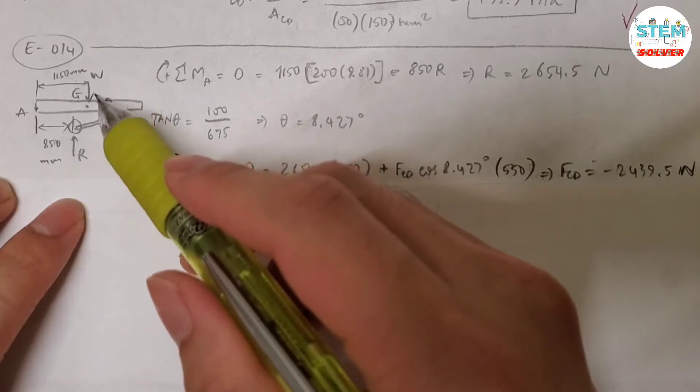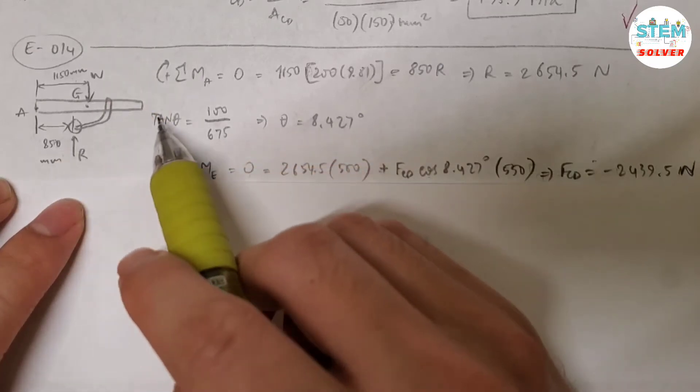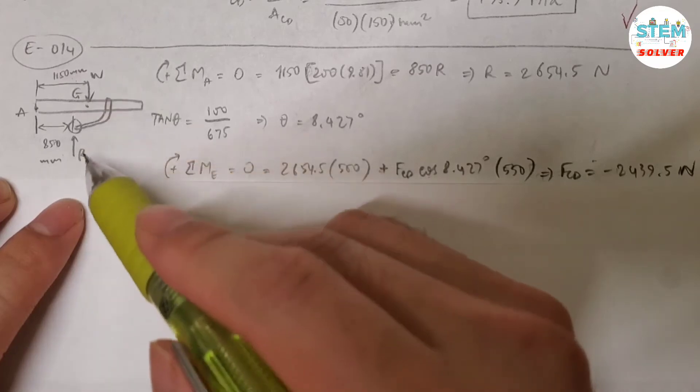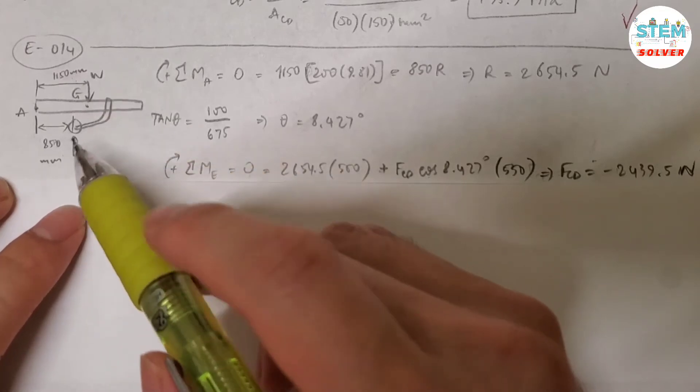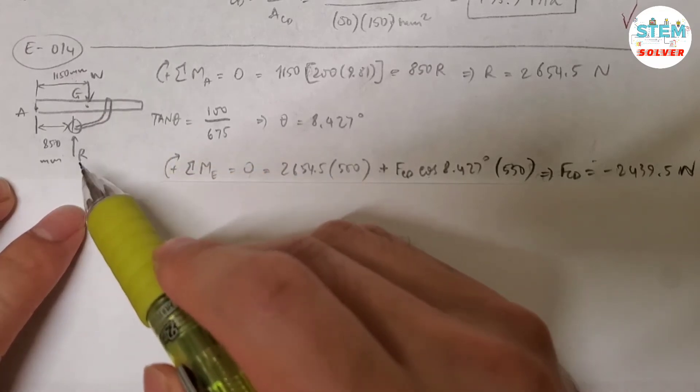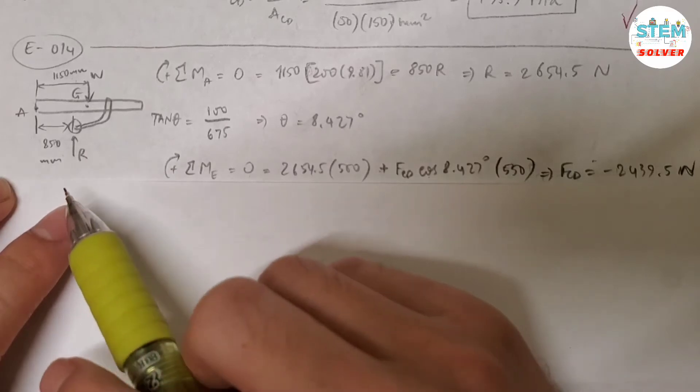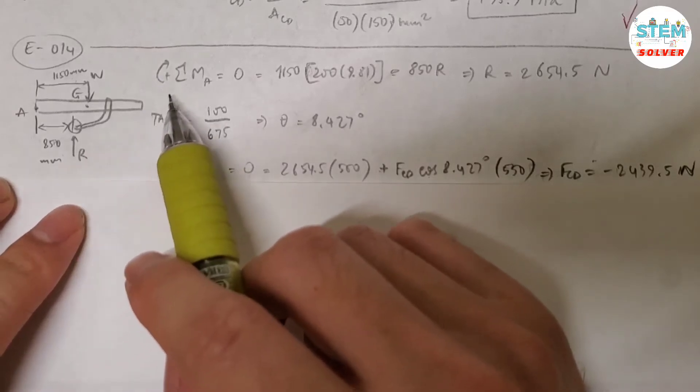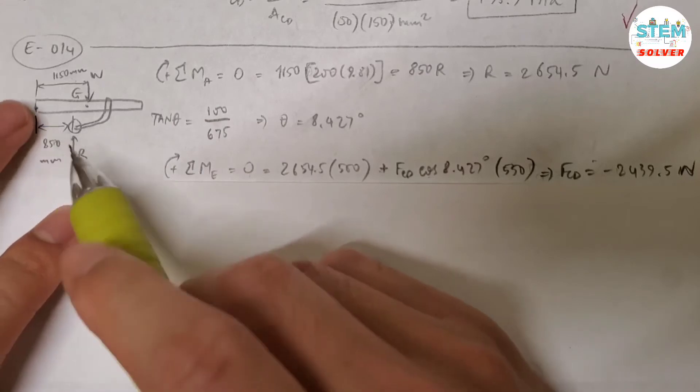So there's no forces in the x direction. And you cannot use the summation of FY to find the unknown, because there's only one equation but you have 2 unknowns. So what I'm going to do is to use the moment. So take a moment about A, about this point.